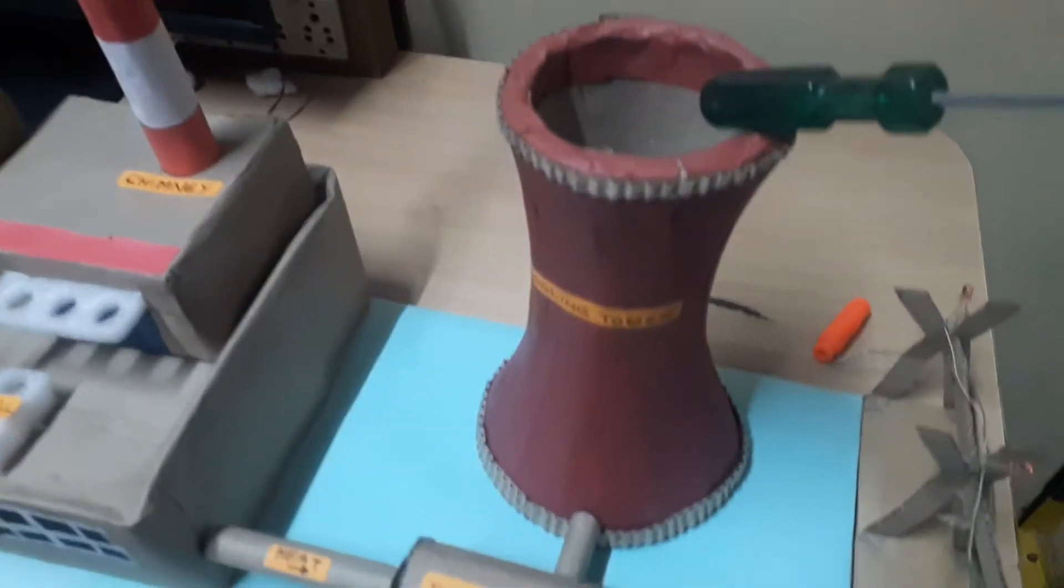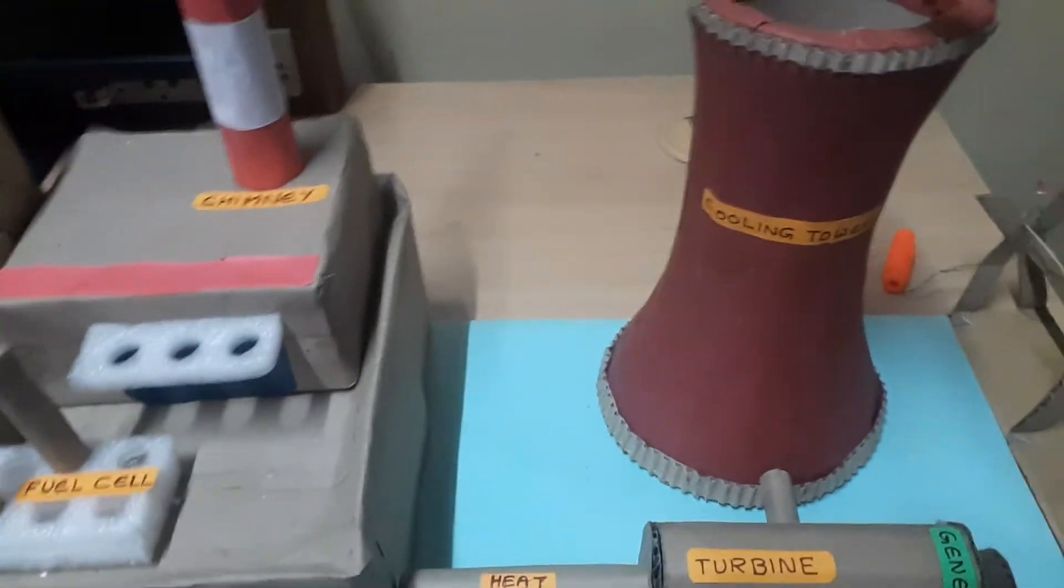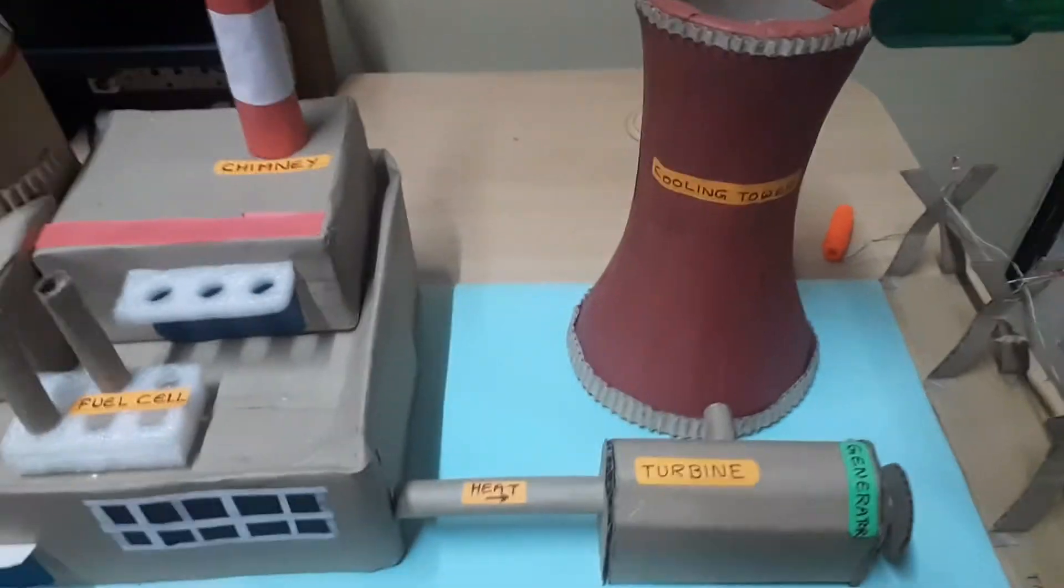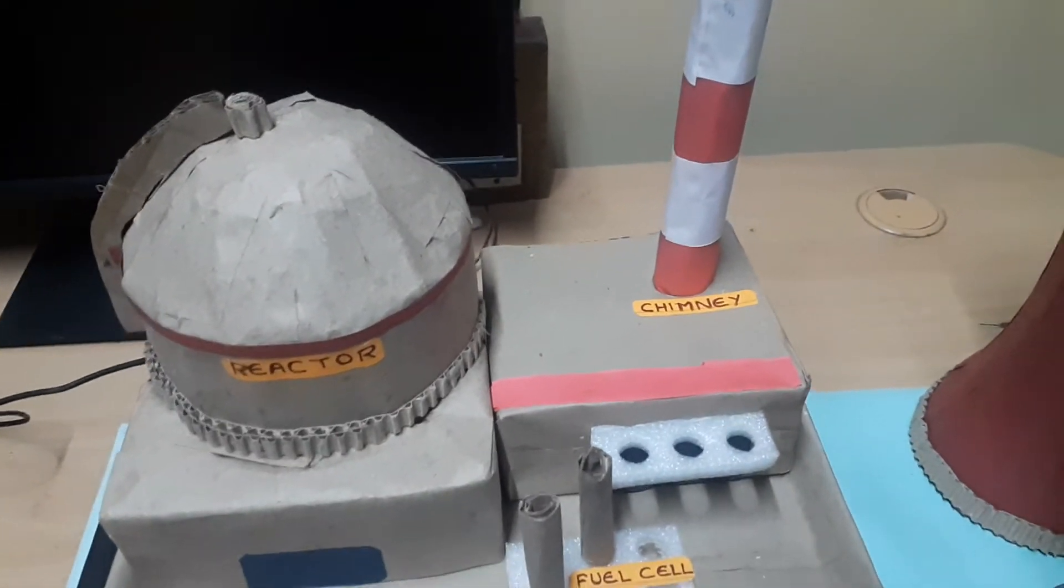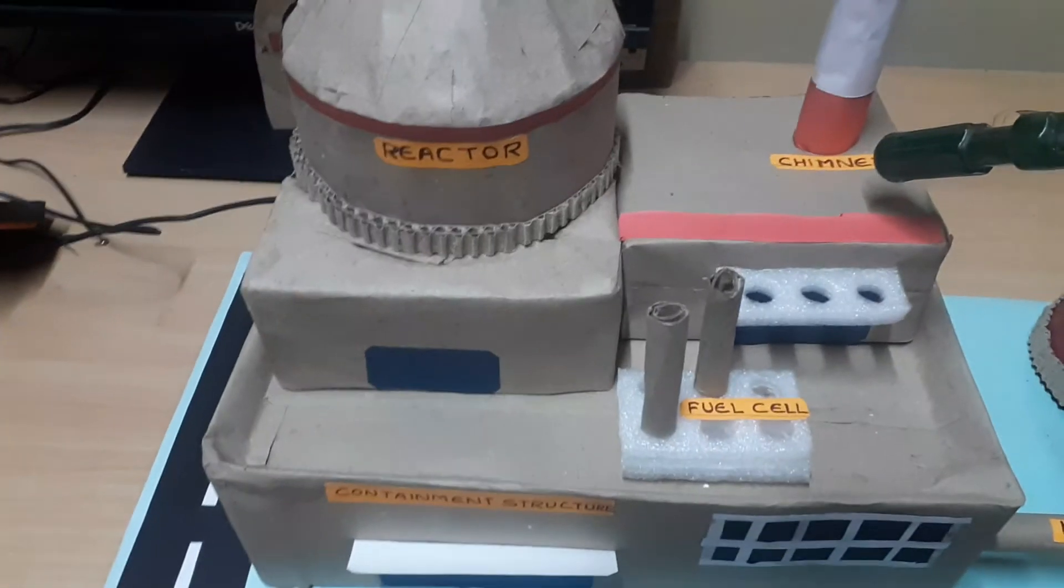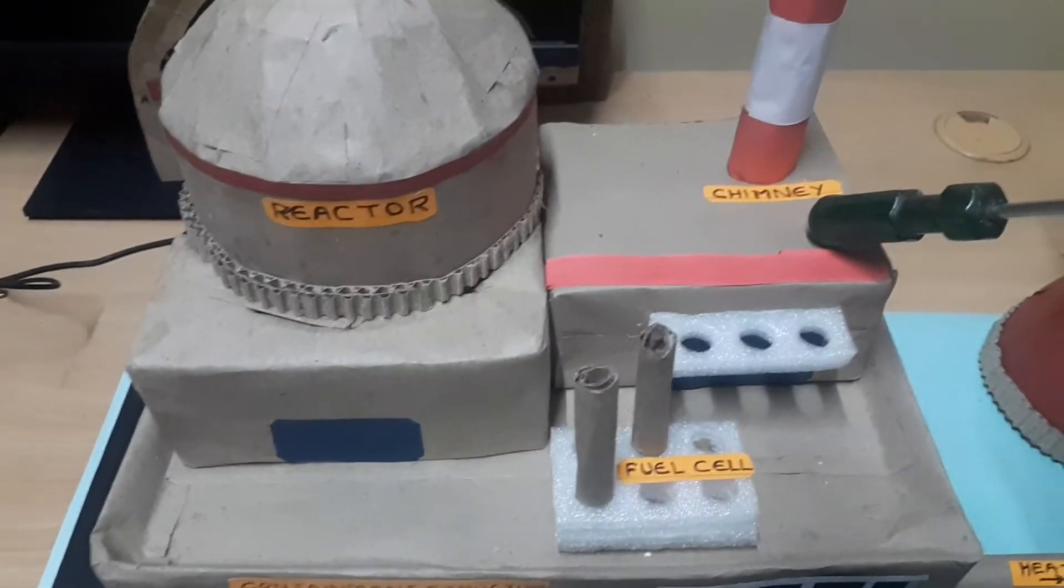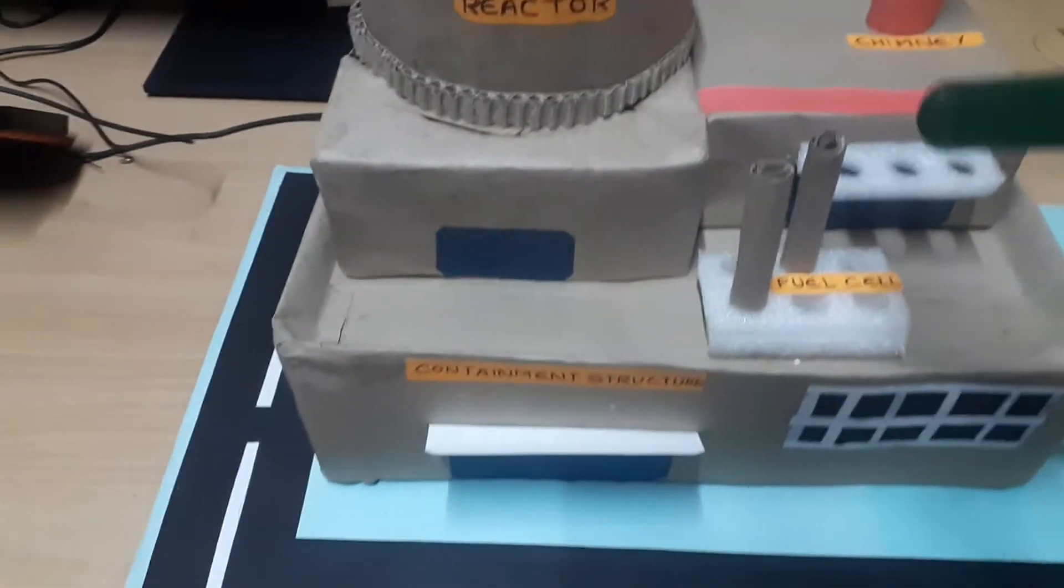This is the cooling tower. The cooling tower is used to cool the hot gases. This is the chimney to exhaust gases, and this is the chamber where all the control systems are placed.